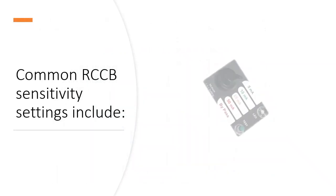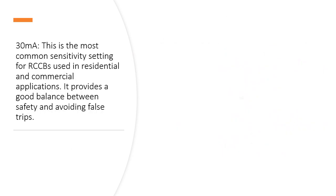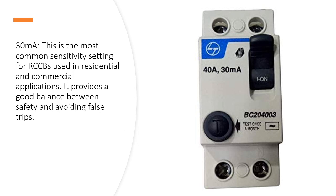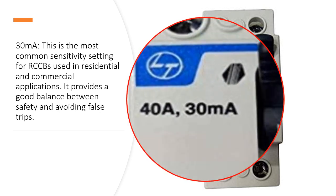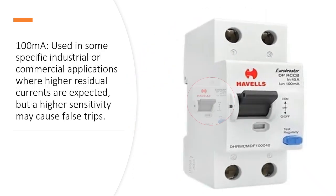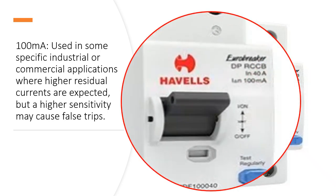Common RCCB Sensitivity Settings include 30mA, which is the most common sensitivity setting for RCCBs used in residential and commercial applications. It provides a good balance between safety and avoiding false trips. 100mA is used in some specific industrial or commercial applications where higher residual currents are expected, but a higher sensitivity may cause false trips.